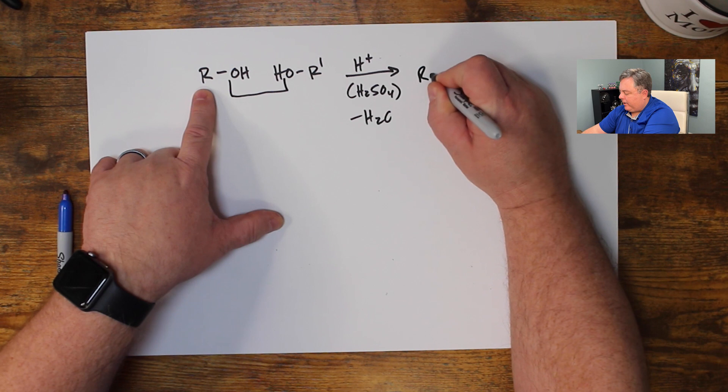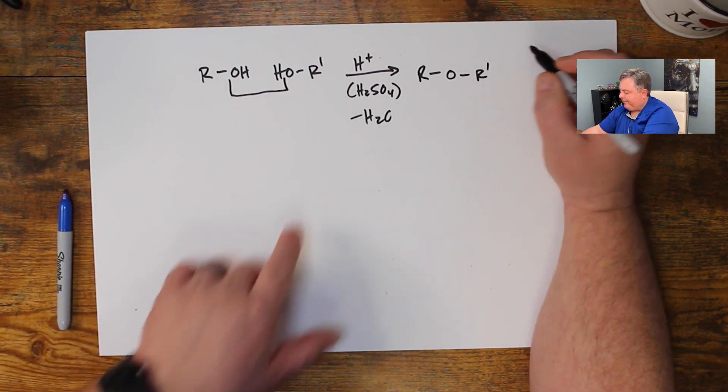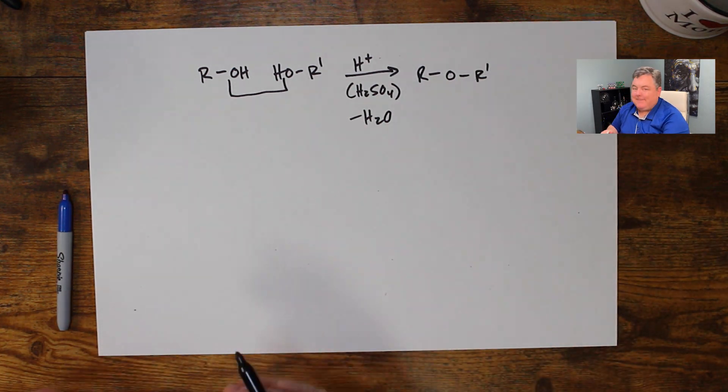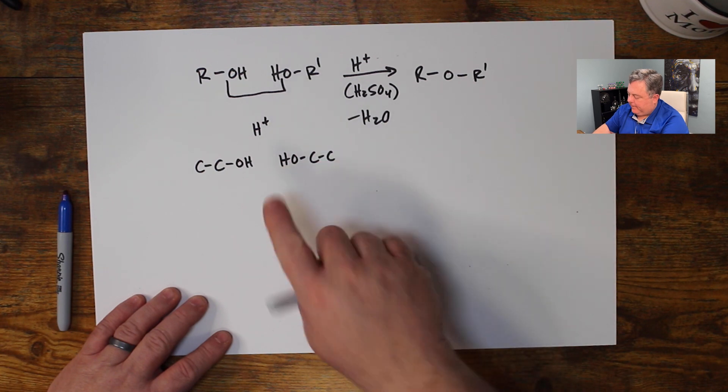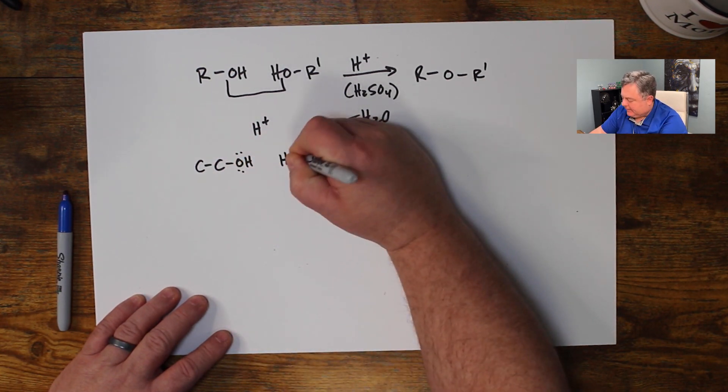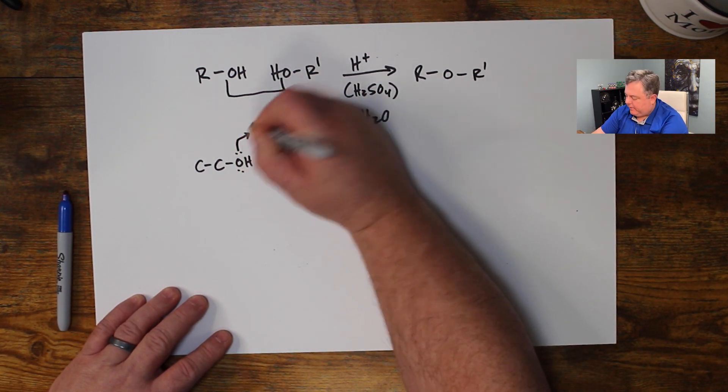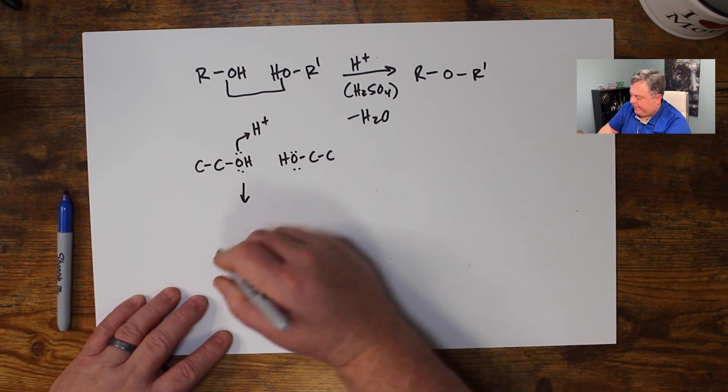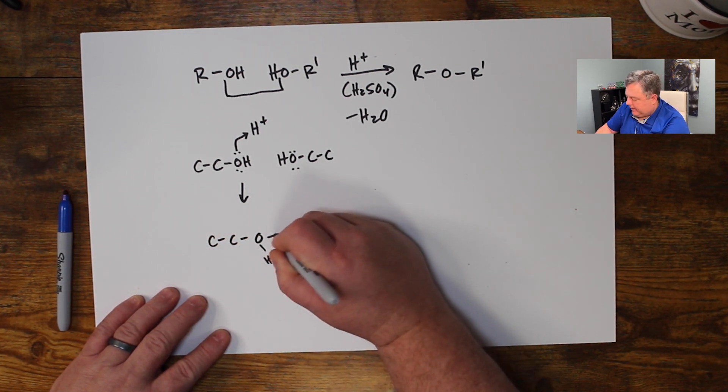We can take two alcohols, we can add acid, often that might be sulfuric acid, and we can lose water. So we can lose two H's and an O and I'll end up with an R bonded to an oxygen bonded to an R prime.